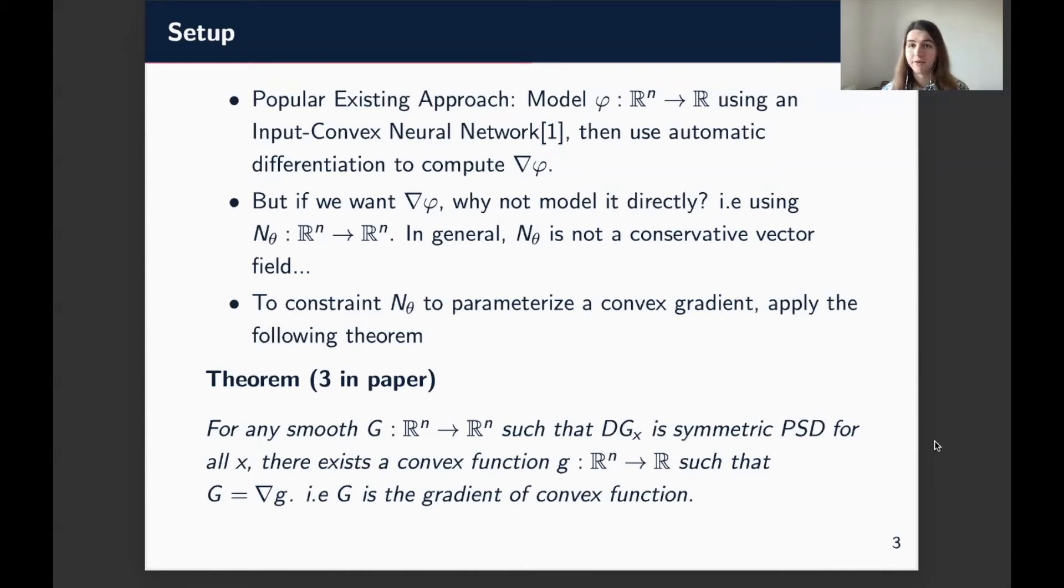The first of which is that if you have a vector field with a symmetric Jacobian, then that is a conservative vector field, which really just follows from the definition. And second, if you have the Jacobian of a vector field being positive semidefinite, then in the case where it's a conservative vector field, that Jacobian of the gradient is actually the Hessian matrix of the potential. So having that be positive semidefinite is equivalent to the potential itself being a convex function.